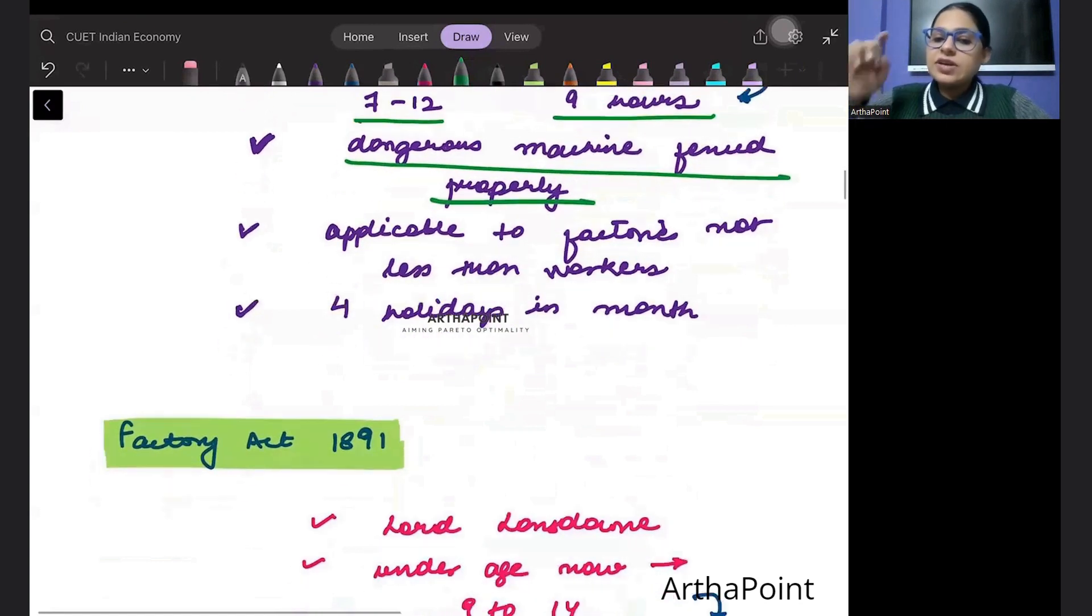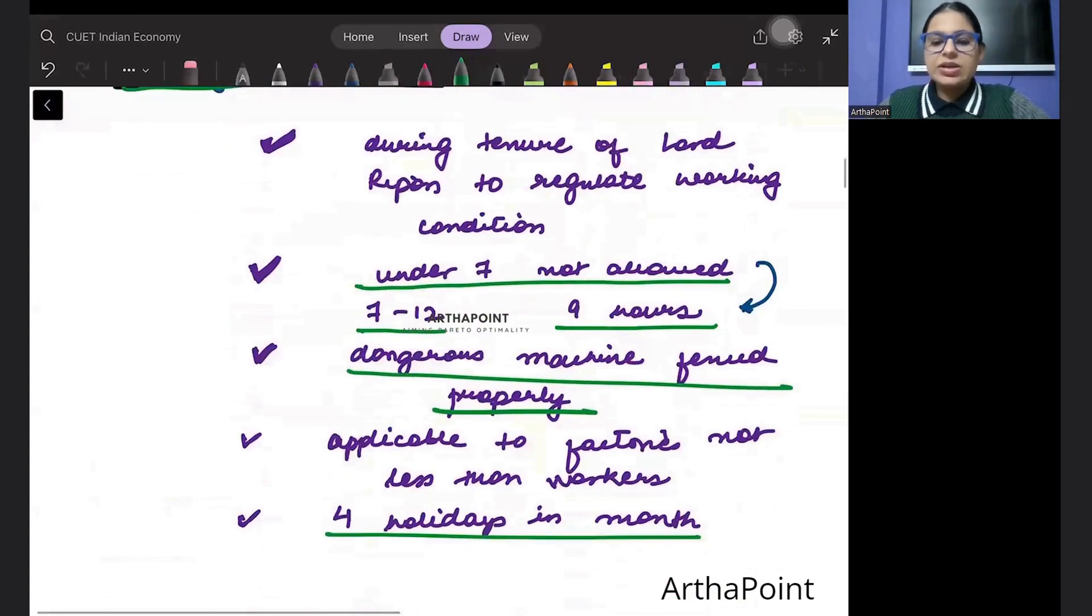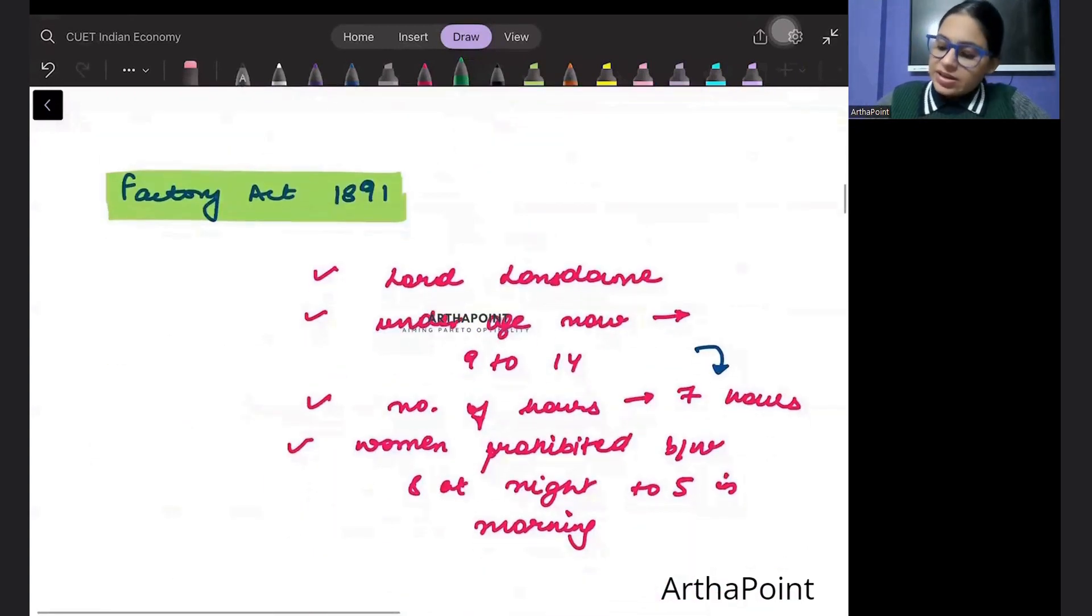And they were given four holidays in a month according to this Factories Act 1881. Then after Factories Act 1881, we had the Factories Act 1891.